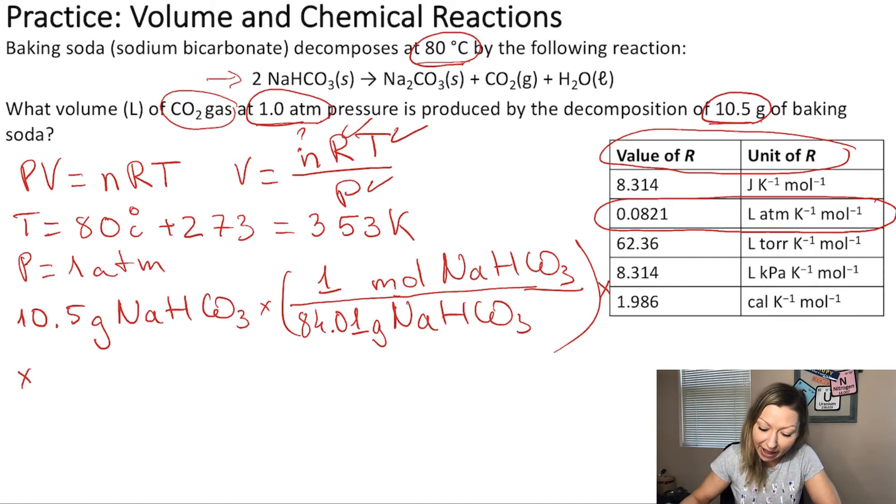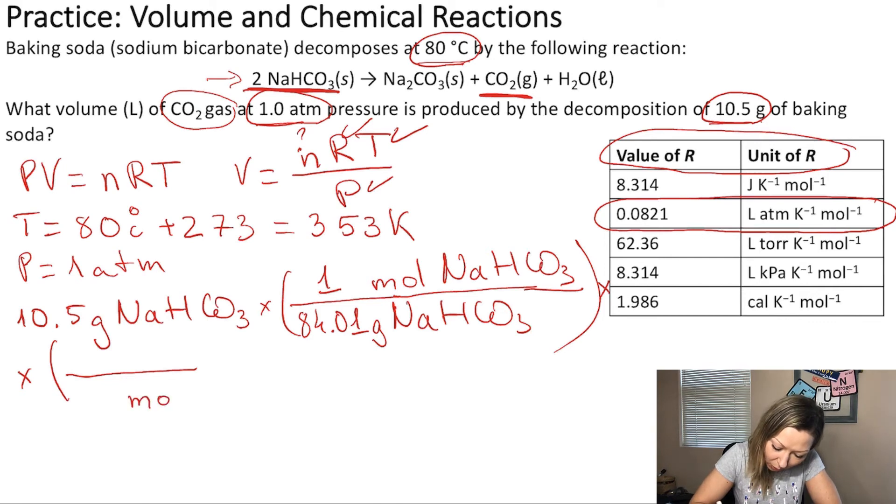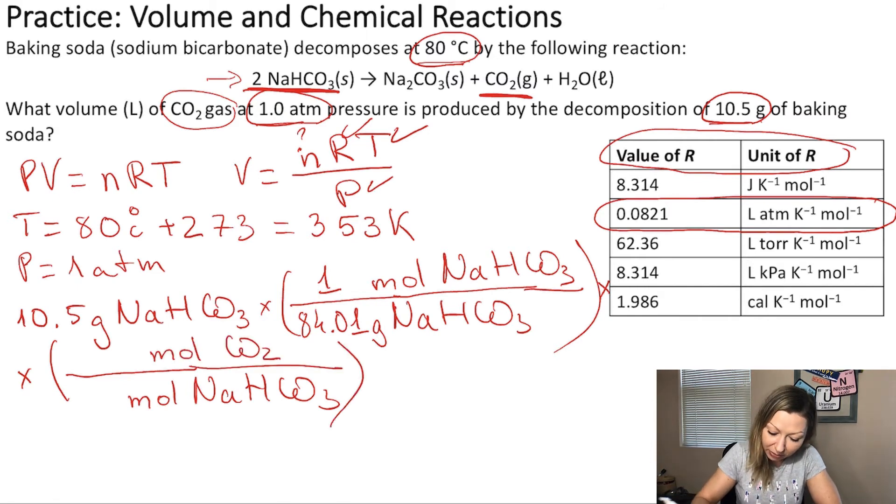So, after this, we can use the balanced chemical equation, where we know that if we have two moles of baking soda, we are going to produce one mole of carbon dioxide gas. So, let's put that into a fraction. We have to convert the moles of NaHCO3 into the moles of CO2. And from the equation, two goes here and one goes on top there.